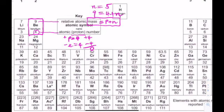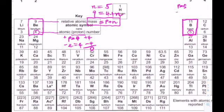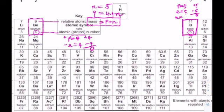For boron, the atomic number is 5, so protons = 5 and electrons = 5. The mass number is 11, so neutron number = 11 − 5 = 6.